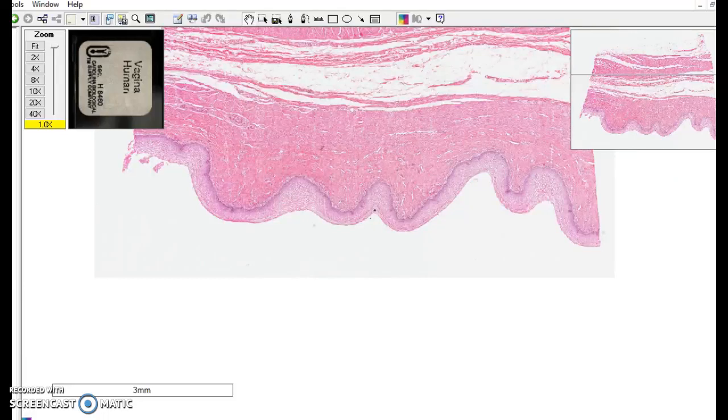Stratified squamous epithelium, non-keratinized. It's found lining the tubes in the body that reach the surface. You'll see it inside the mouth, in the esophagus, in the anus, and here you can see it in the vagina.